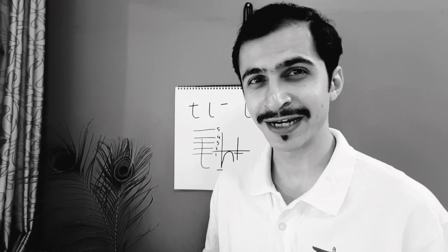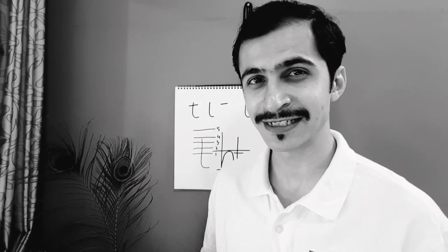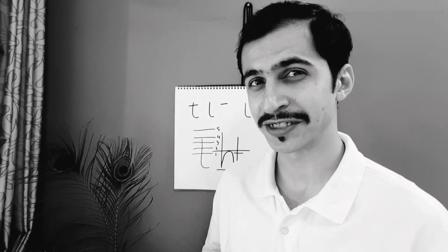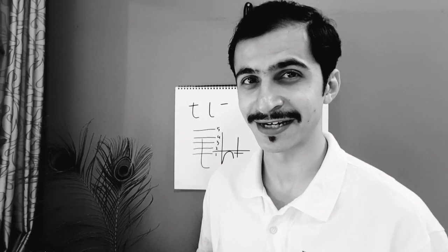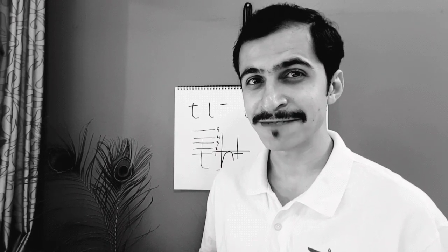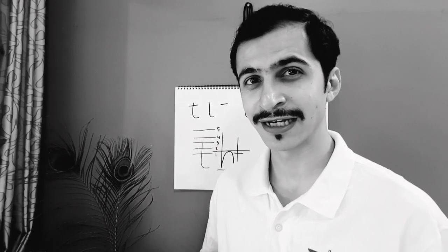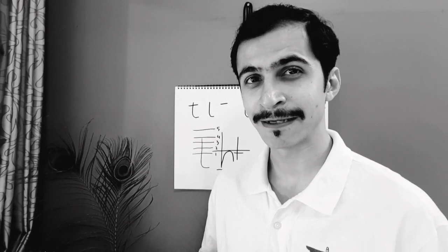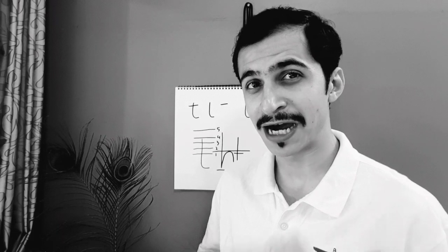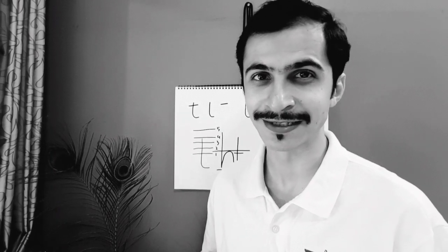It is a bit complicated, but I will try to make the explanation and the observational points a bit simpler for you to understand. Let's change perspective and have a closer look at what the letter T represents on the piece of paper and how our mindset is revealed through this formation.